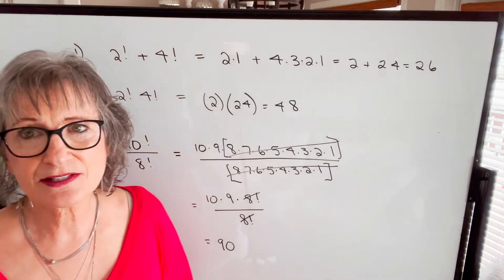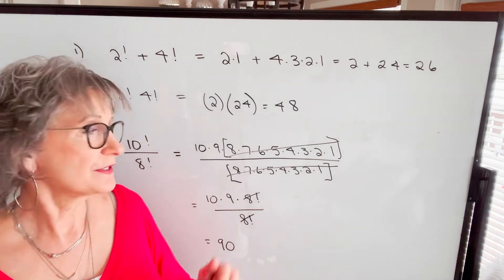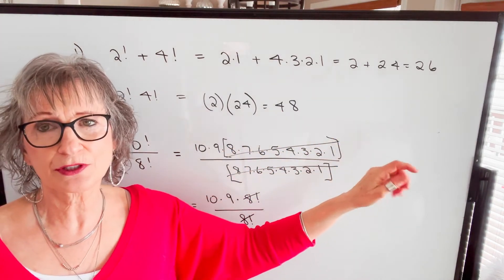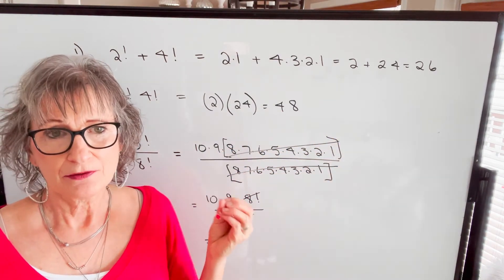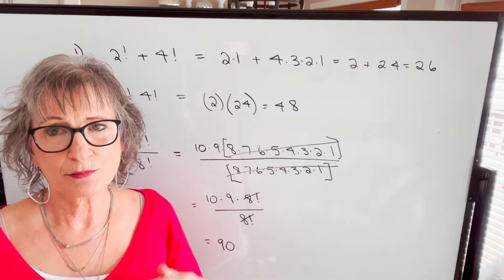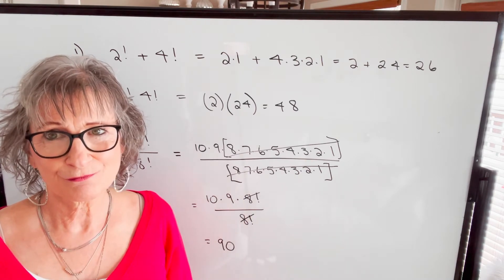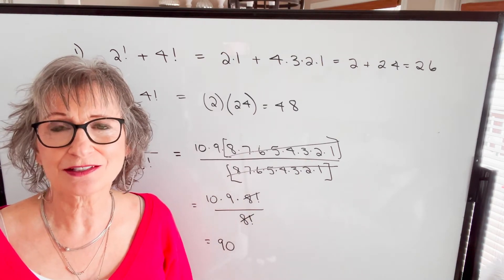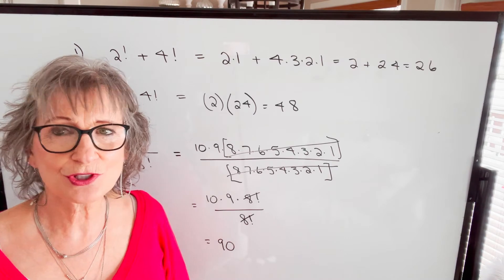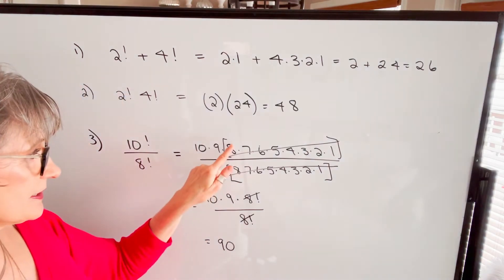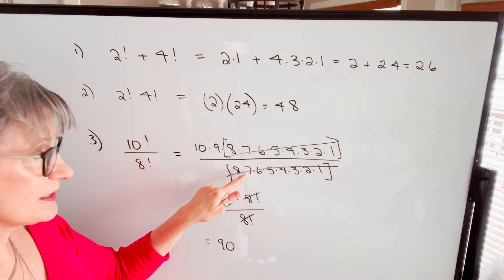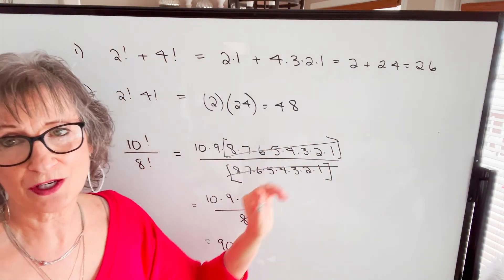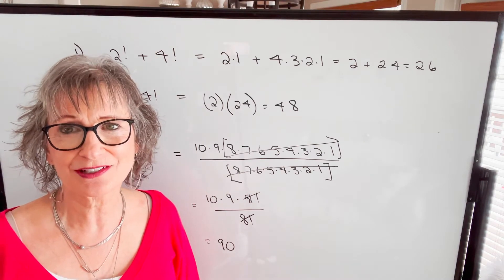So we can take a shortcut if we understand the relationship between a factorial of a higher number compared to a factorial of a lower number, and the answer is 90. We can save ourselves some time, because if your numbers get really large, your calculator might not be able to handle it. So it's good to know that we can simplify these without having to find the whole factorials in the numerator and the denominator.